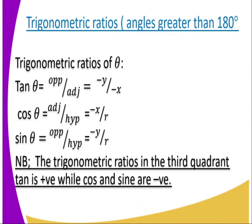We take to the third quadrant — these are the angles that are greater than 180 degrees, and that is where we have theta. Tan theta is opposite over adjacent, which is negative y divided by negative x, and this gives a positive result. Cos theta is adjacent divided by hypotenuse, which is negative x divided by r. And sin theta is opposite divided by hypotenuse, which is negative y divided by r — that is negative. So in the third quadrant, tan is positive while cos and sin are negative.